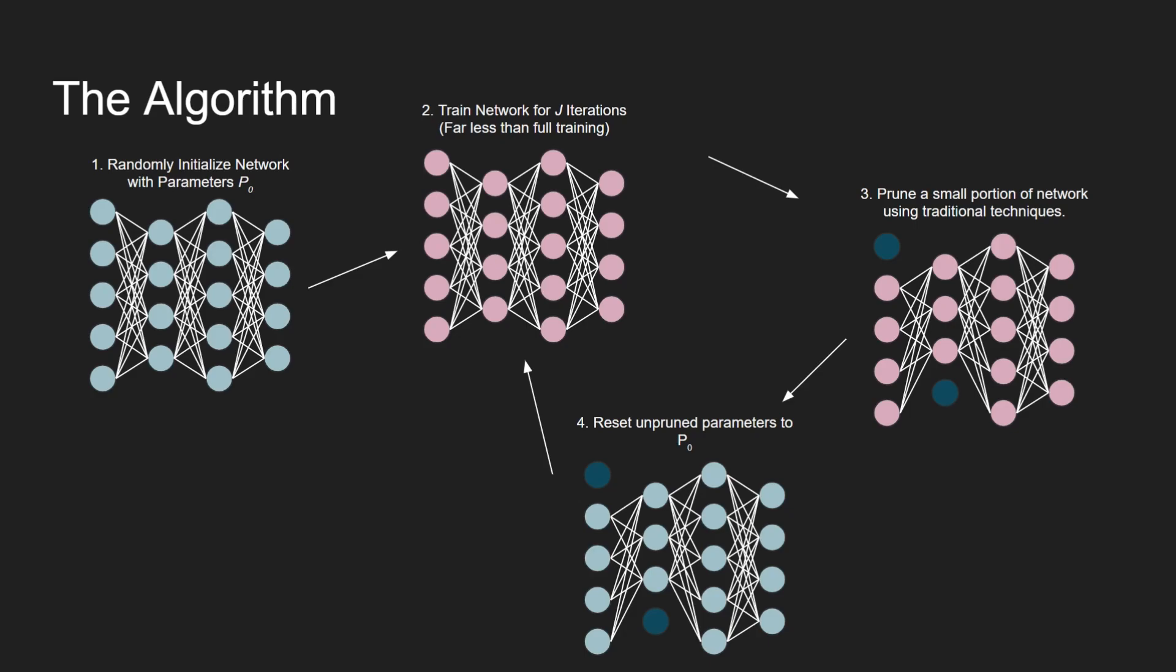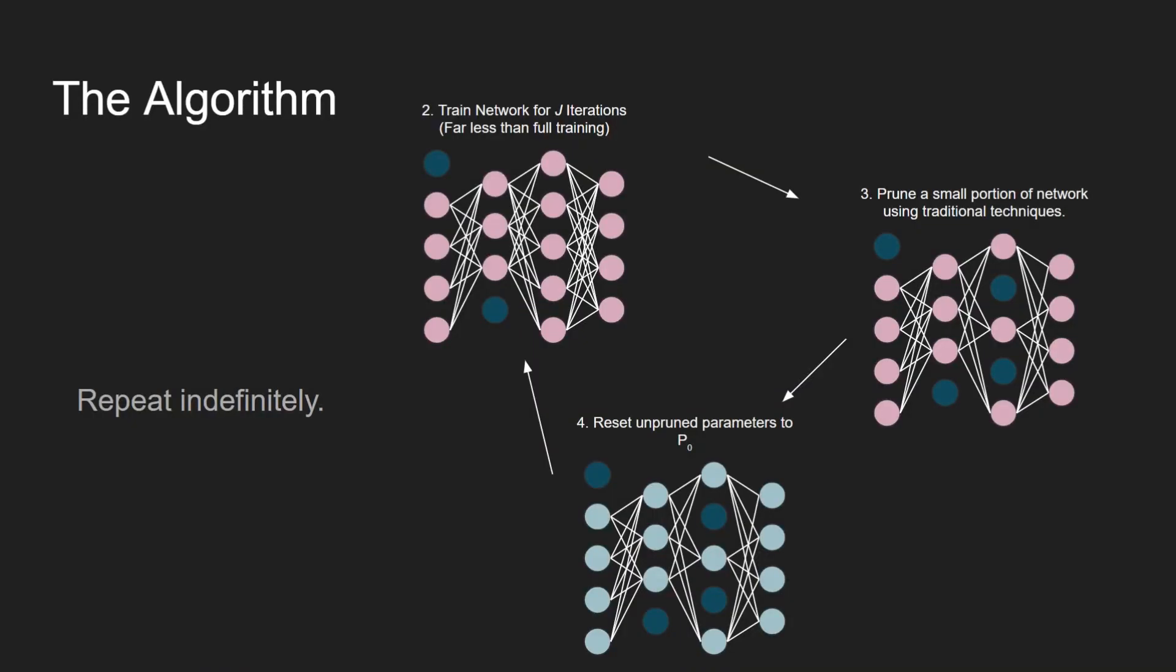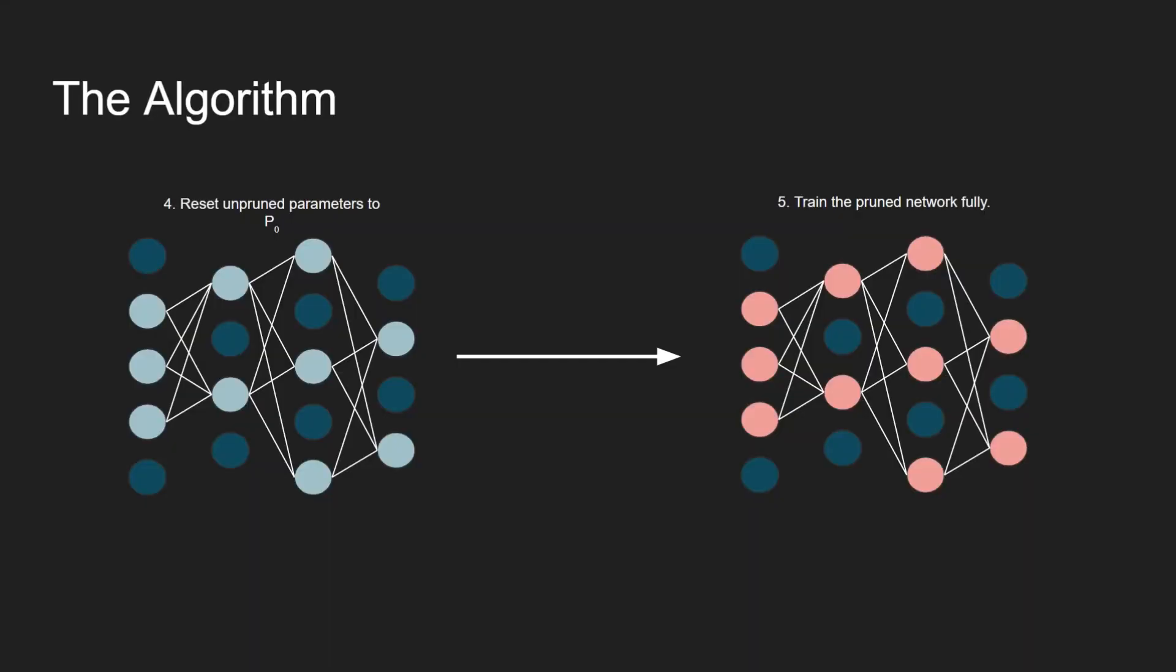Finally, we can reset the parameters that weren't pruned out back to their initialization, P0. We repeat the process of training, pruning, and resetting over and over until eventually we've reached our winning ticket initialization. Once the winning ticket has been found, the network can then be trained fully.